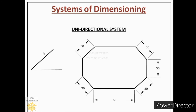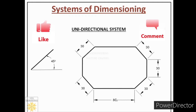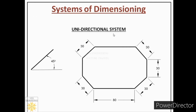Now we will see how to place dimensions for different angles. In the aligned system we placed dimensions above the line, but here we place them on the line after breaking it. To do this, first draw the dimension line, then erase it from the middle using your eraser, then place the dimension value on the broken line. The dimension will again be readable from the bottom of the page. Everywhere, dimensions are readable from the bottom — that is why it is called the unidirectional system.